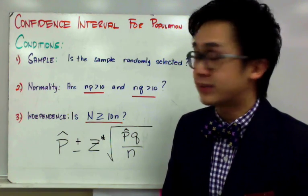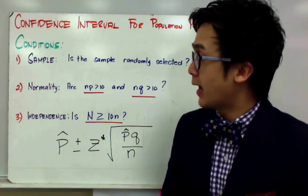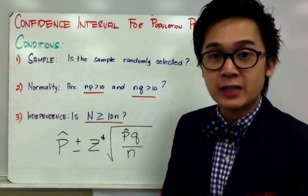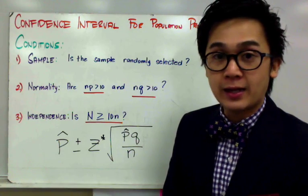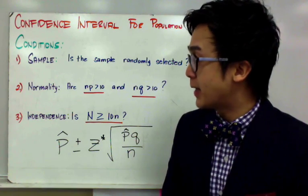For our first condition, the sample should still be random. For normality, we need to satisfy the rule of thumb number 2, which is NP greater than 10 and NQ greater than 10.